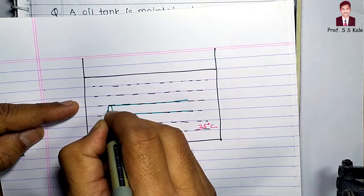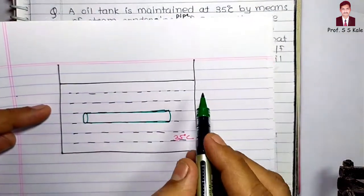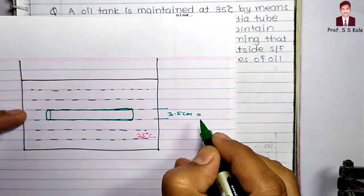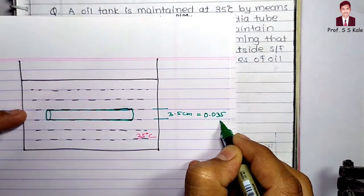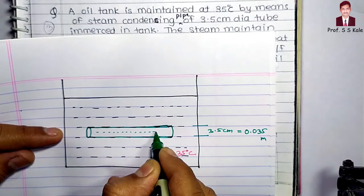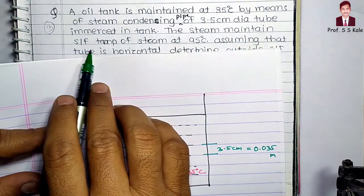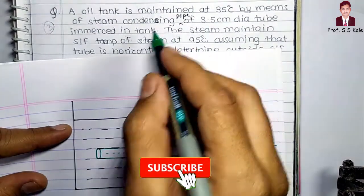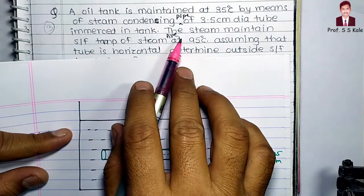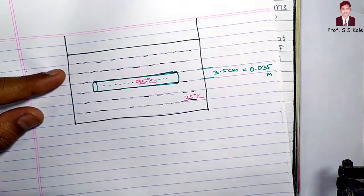Inside this pipe we are having steam, because it is described as a steam condensing pipe of 3.5 centimeter diameter. The steam maintains the surface temperature of the steam pipe at 95 degrees Celsius. The tube is assumed to be horizontal.